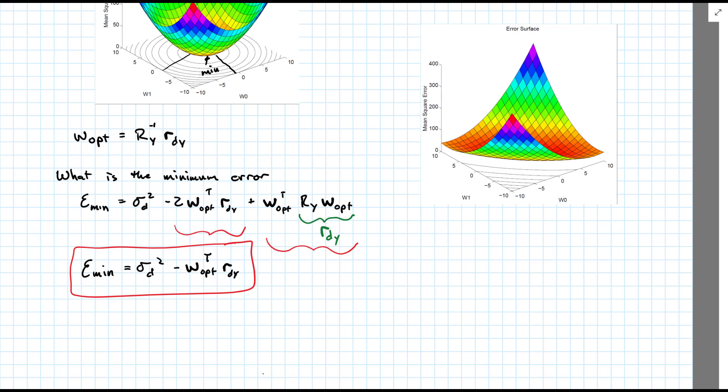I should change. The minimum error. The solution, of course, implicitly depends on r_y because that's where we get r_opt. However, the minimum error is influenced only by the cross correlation between d and y.